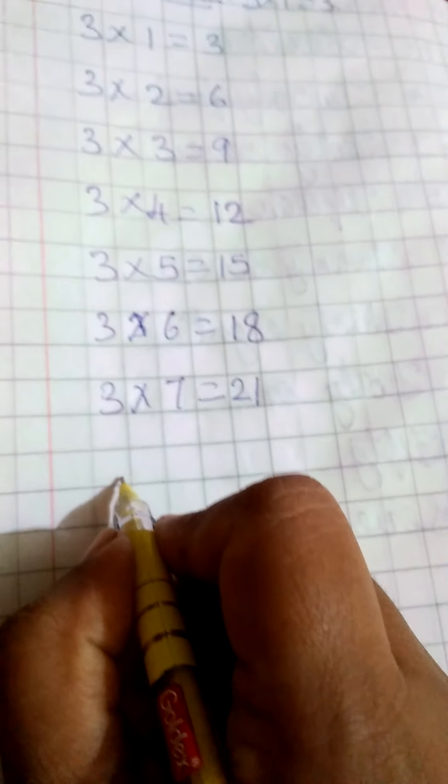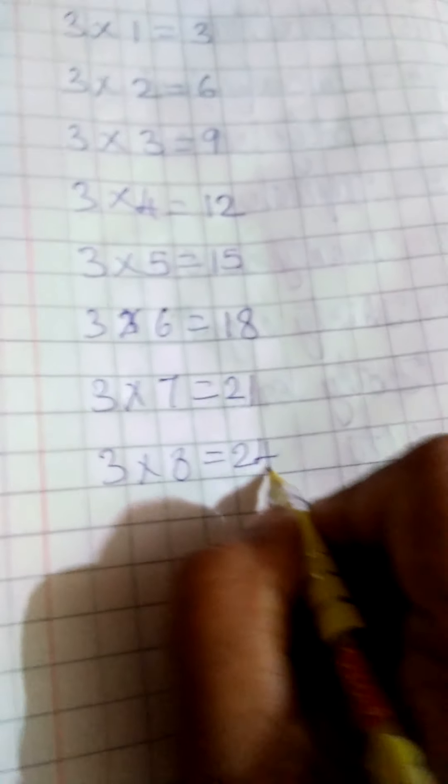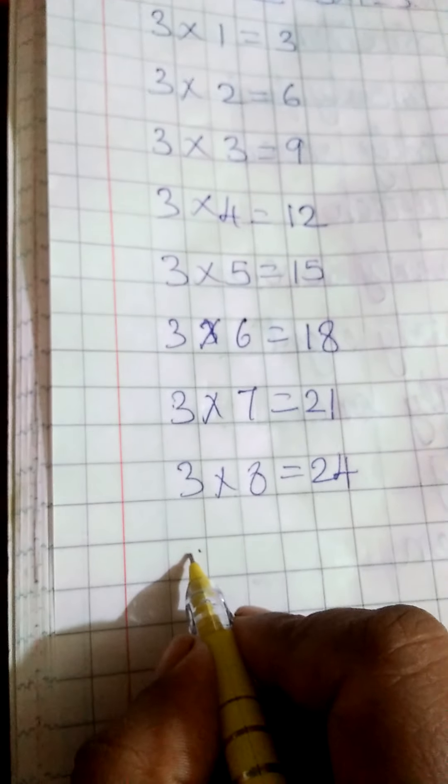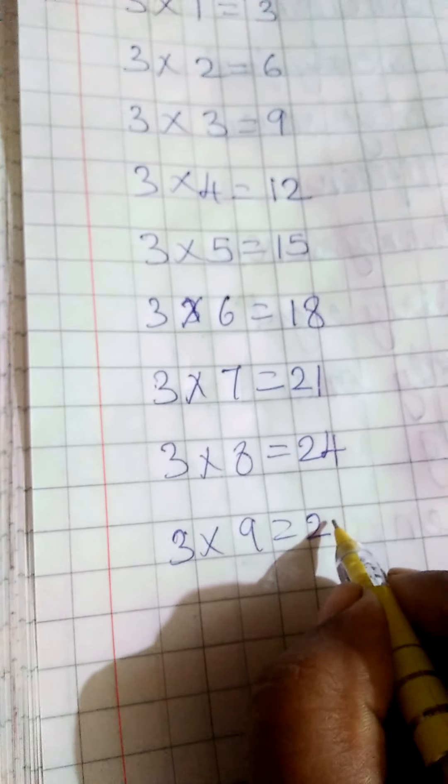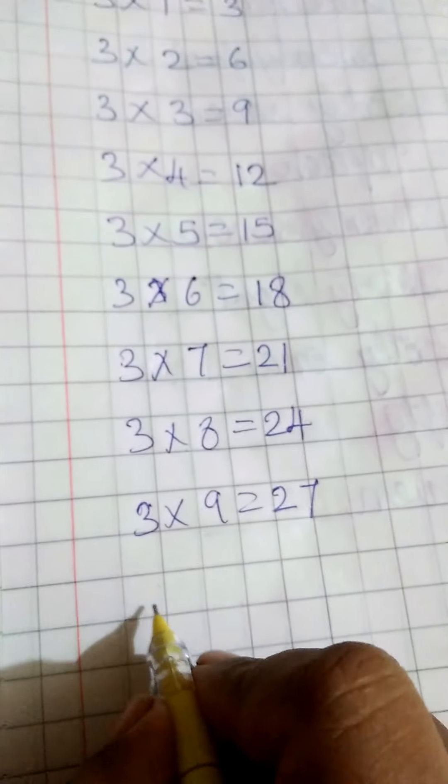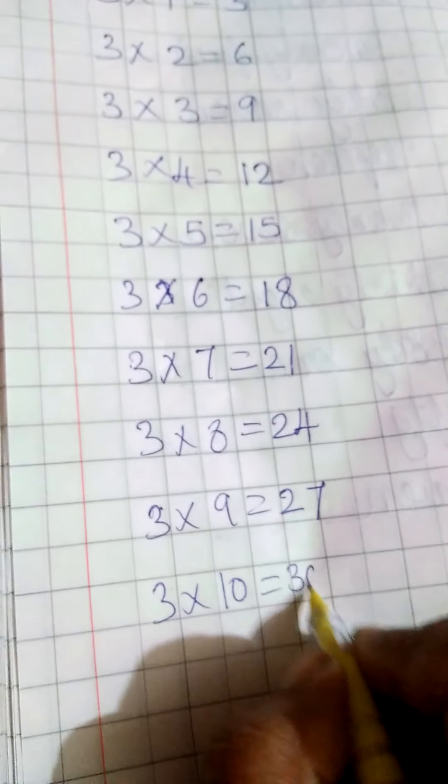3 eights are 24. Next 3 nines are 27. Next 3 tens are 30.